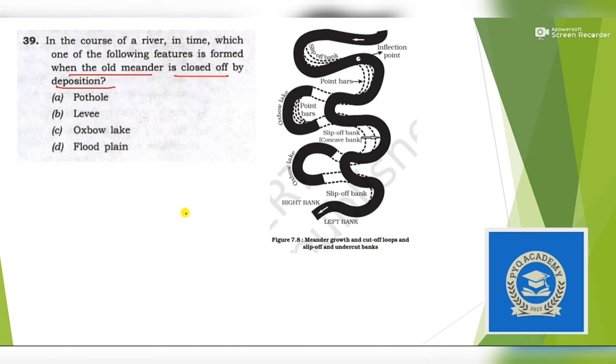This is a question directly from the chapter Landforms of Class 11 Fundamentals of Physical Geography, Part 1. In the image you can see these are the meanders. When the meander leaves its previous path and the place is closed by sand or deposition, this landform formed is known as oxbow lake. The question is asking about when the old meander is closed off by deposition, and the landform left is known as oxbow lake. Our answer is option C, oxbow lake.